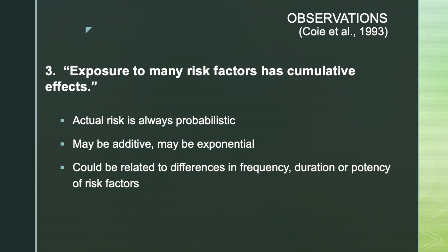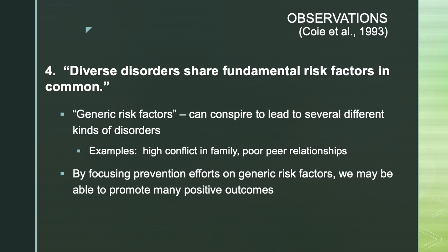This cumulative effect could also be relevant when it comes to differences in the frequency of risk factors, the duration, how long they last, or how potent or disabling those risk factors are. Another observation is that different disorders share fundamental risk factors in common — we refer to these as generic risk factors. These are things that can lead to several kinds of disorders, and it can become a very cost-effective strategy to focus on these generic risk factors, as you get more bang for your buck. Examples could be high conflict in a family or poor peer relationships — both have been demonstrated empirically to be associated with several diverse outcomes. If you intervene on those early in life, you may make changes in many different ways.